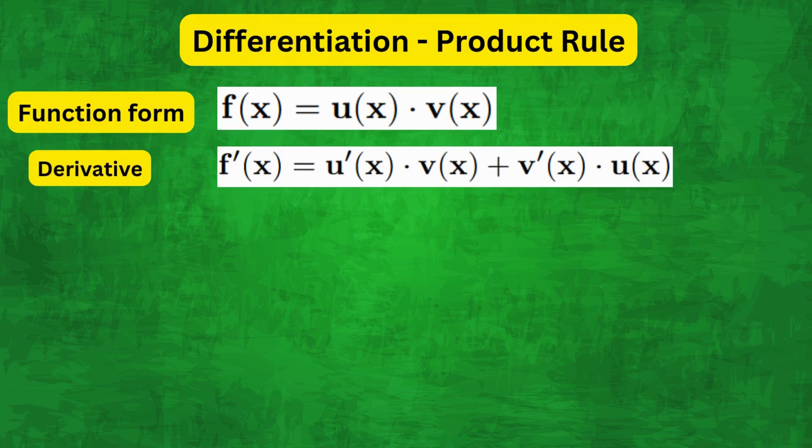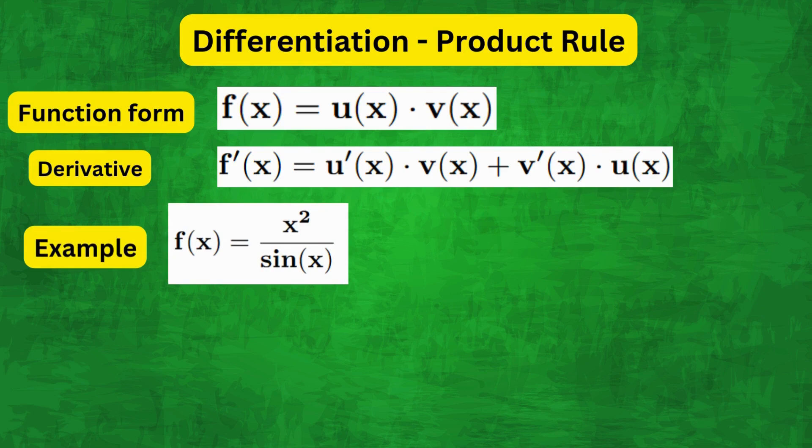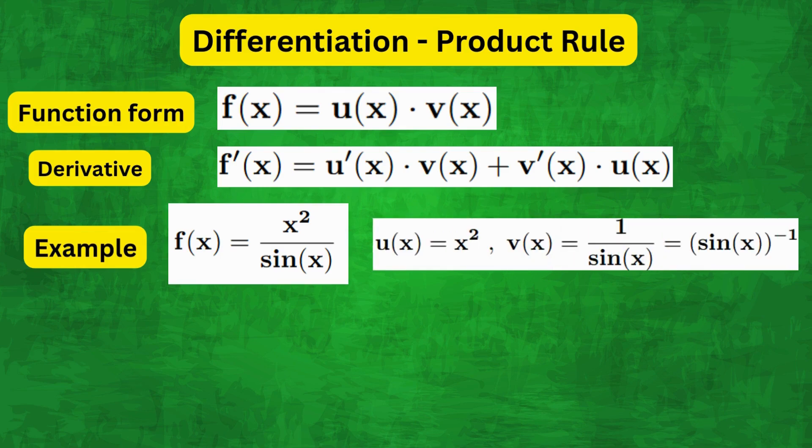So let's understand this rule with the help of this example: f(x) equals x²/sin(x). Now we first identify u(x) as x² and v(x) as 1/sin(x), which is equal to sin(x)^(-1).